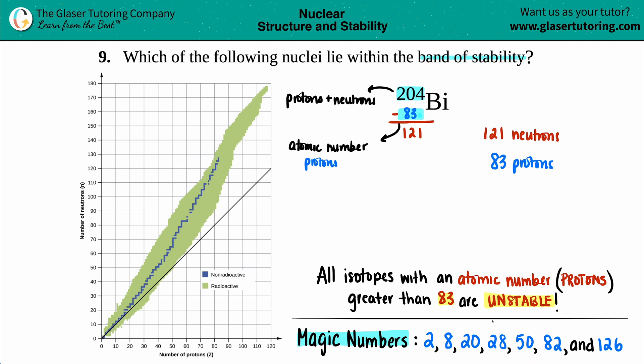The next thing is that all isotopes with an atomic number greater than 83 protons are unstable, but we're right at the cusp, we're at 83, so we still can be in the band of stability.